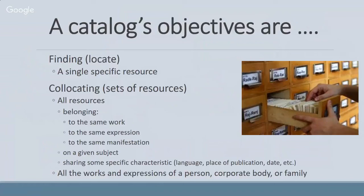Talking about RDA and the catalog, remember that the objective of our catalogs is to either find or locate a specific resource, or to collate sets of resources that belong to the same work — like all the Star Wars stuff — or the same expression, or the manifestations, whether it's the Blu-ray, the Beta, the VHS, or whatever, right down to the items on your shelf. The catalog is also used to find everything a library owns on a particular subject. What we're talking about is what catalogers have been doing all along — it's how we think about what we do that has changed under RDA.